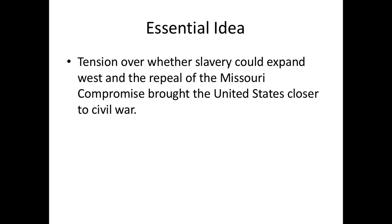The Missouri Compromise had successfully lowered the tension over slavery in the West for a while, but that was before the Mexican-American War. After the Mexican-American War, you're going to see different attempts to compromise come and go, and ultimately they're going to fail. There are so many events that happened in the 1850s that I could not fit it in a single lecture, so the next lecture will be a continuation of this theme of trying to solve the issue of slavery in the West and ultimately failing.